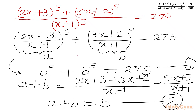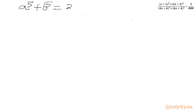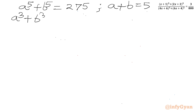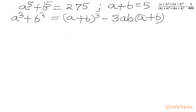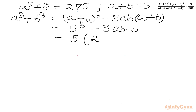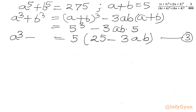Now I will calculate a cubed plus b cubed also. We have a power 5 plus b power 5 equal to 275, and a plus b equal to 5. I will use the algebraic formula: a cubed plus b cubed equals (a+b) cubed minus 3ab times (a+b). Putting in the values: 5 cubed minus 3 times ab times 5. Taking 5 common gives 5 times (25 minus 3ab). This is equation number 3, which is the value of a cubed plus b cubed.